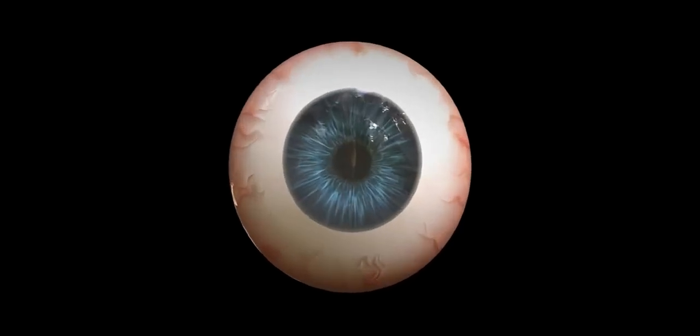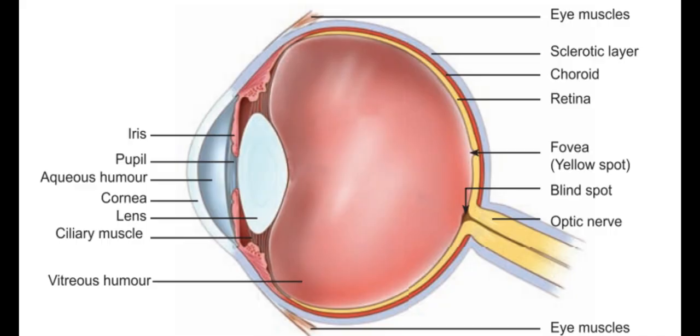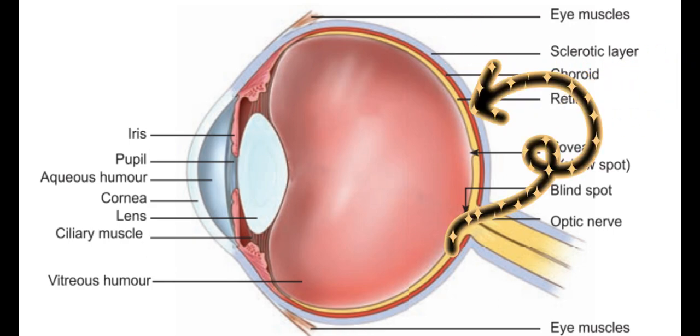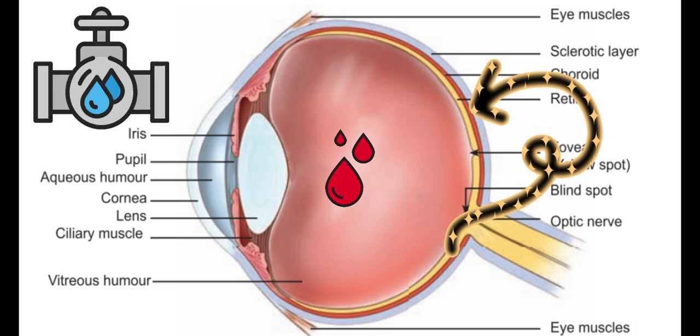Let's learn the basic parts of it. First, we have eye muscles which help to move the eye around. Then we have a layer called the sclerotic layer which is tough and doesn't allow light to pass through. Choroid is the red color layer here which supplies blood to the eye, just like water pipes.